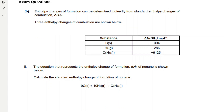We've got an exam question: enthalpy changes of formation can be determined indirectly from standard enthalpy changes of combustion. Three enthalpy changes of combustion are shown — the enthalpy change of combustion of carbon, hydrogen, and nonane — and the equation that represents the enthalpy change of formation of nonane is shown below. Calculate the standard enthalpy change of formation of nonane. Remember, the definition of the enthalpy change of formation is the enthalpy change when one mole of a compound is formed from its constituent elements, so we're forming one mole of nonane from its elements.